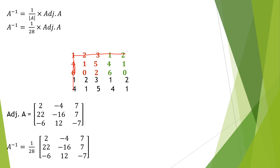For the first row of the adjoint: 1 times 2 minus 0 times 5 gives 2. Next, 0 times 3 minus 2 times 2 is 0 minus 4, giving minus 4. Next, 2 times 5 minus 1 times 3 is 10 minus 3, giving 7. We are done with the first row.